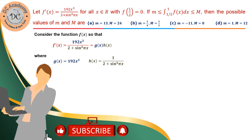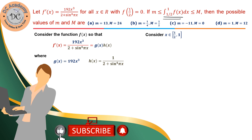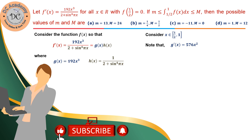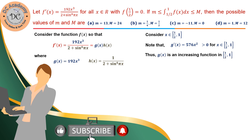Our domain of interest is [1/2, 1], because the integration is defined on this interval only. We note that g'(x) = 576x², which is positive for all x in [1/2, 1]. Therefore g(x) is an increasing function on this domain.